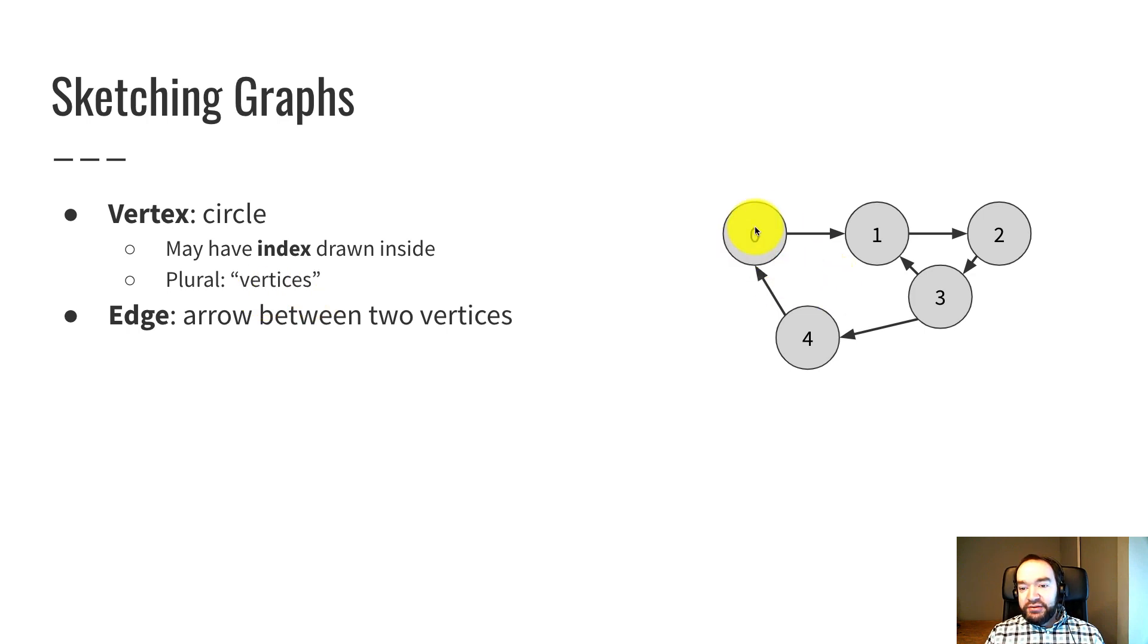So each vertex is drawn as a circle, possibly with an index or label inside the circle, and every edge is drawn as an arrow between two vertices with a clearly defined starting and ending point.